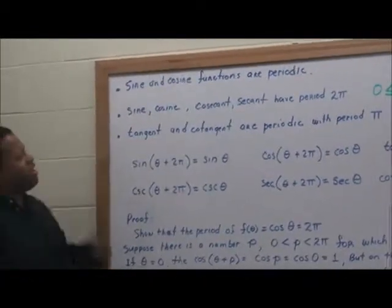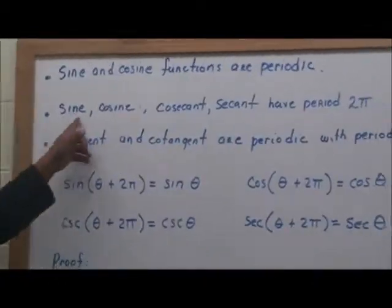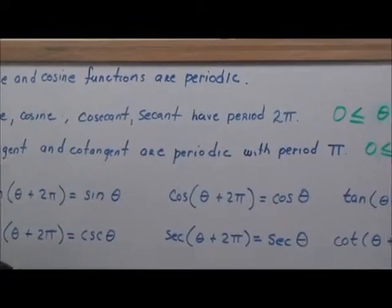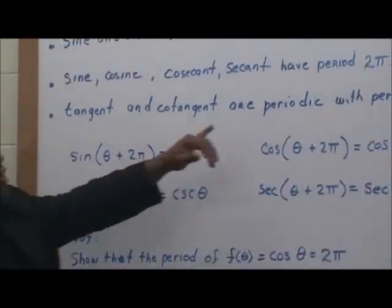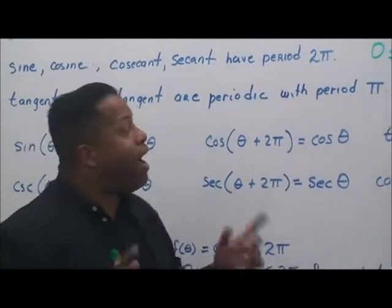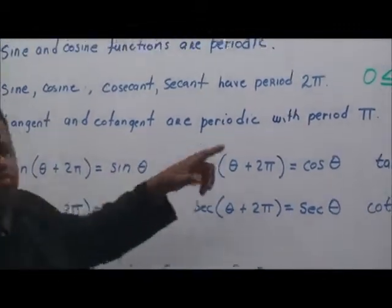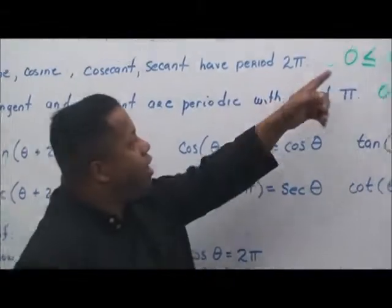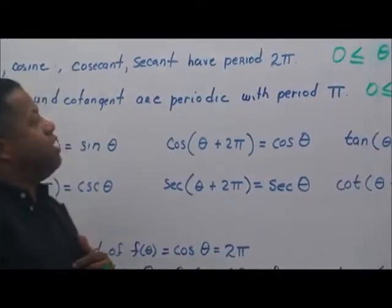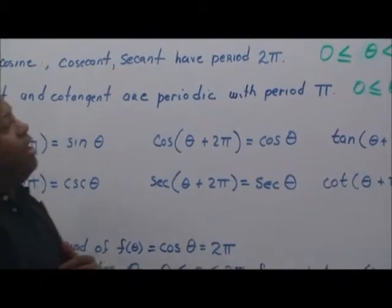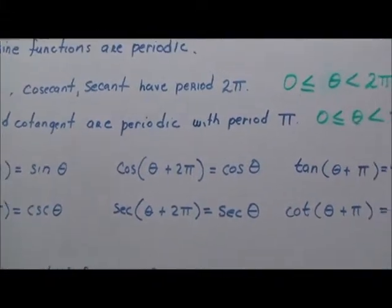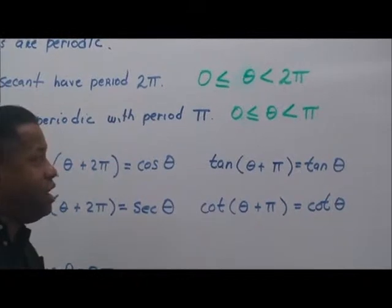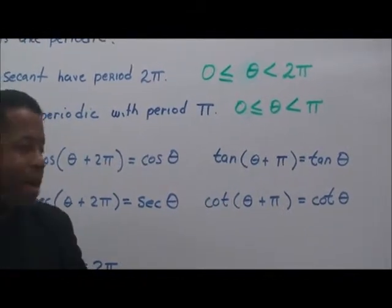Sine, cosine, cosecant, and secant are periodic with a period of 2 pi, meaning one full revolution. Tangent and cotangent are periodic with a period of pi. For sine, cosine, cosecant, and secant, the values cycle over the interval 0 ≤ theta < 2 pi, while for tangent and cotangent, the values cycle over 0 ≤ theta < pi.